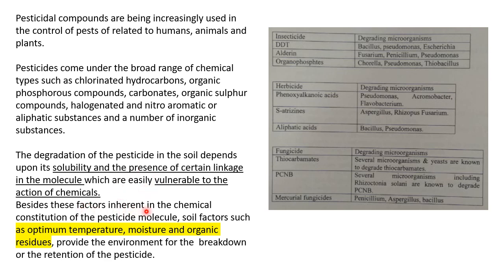Beside factors inherent in the chemical constitution of the pesticide molecule, soil factors such as optimum temperature, moisture, and organic residue provide the environment for the breakdown and retention of these pesticides. These factors determine whether the rate of degradation will increase or decrease.